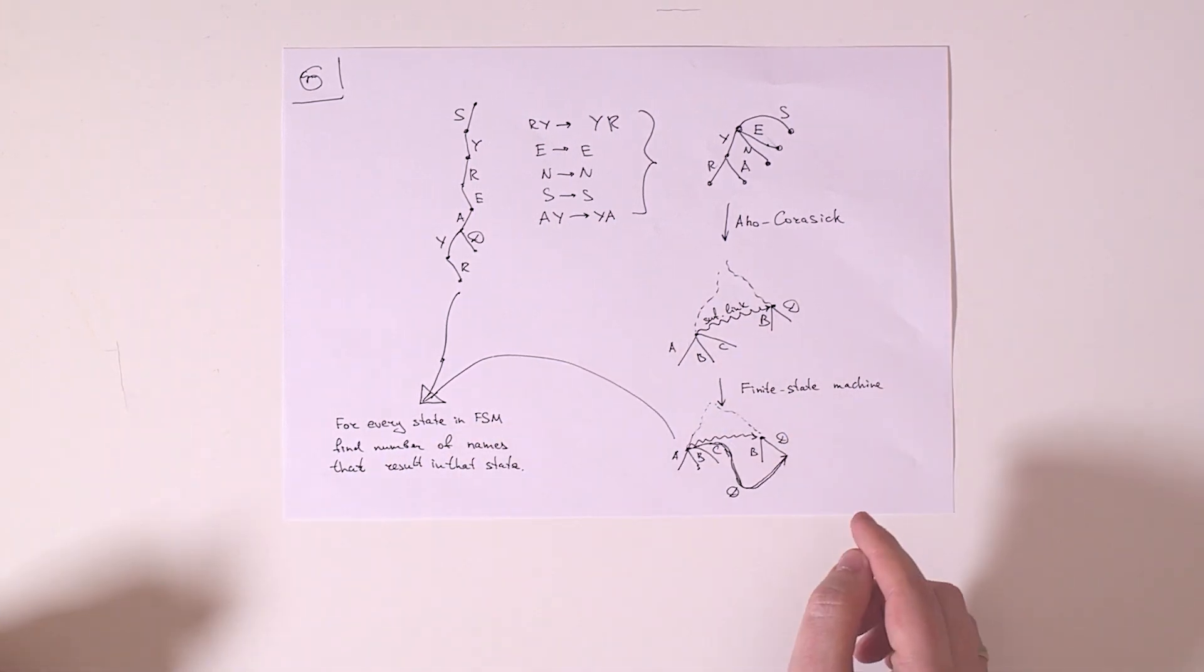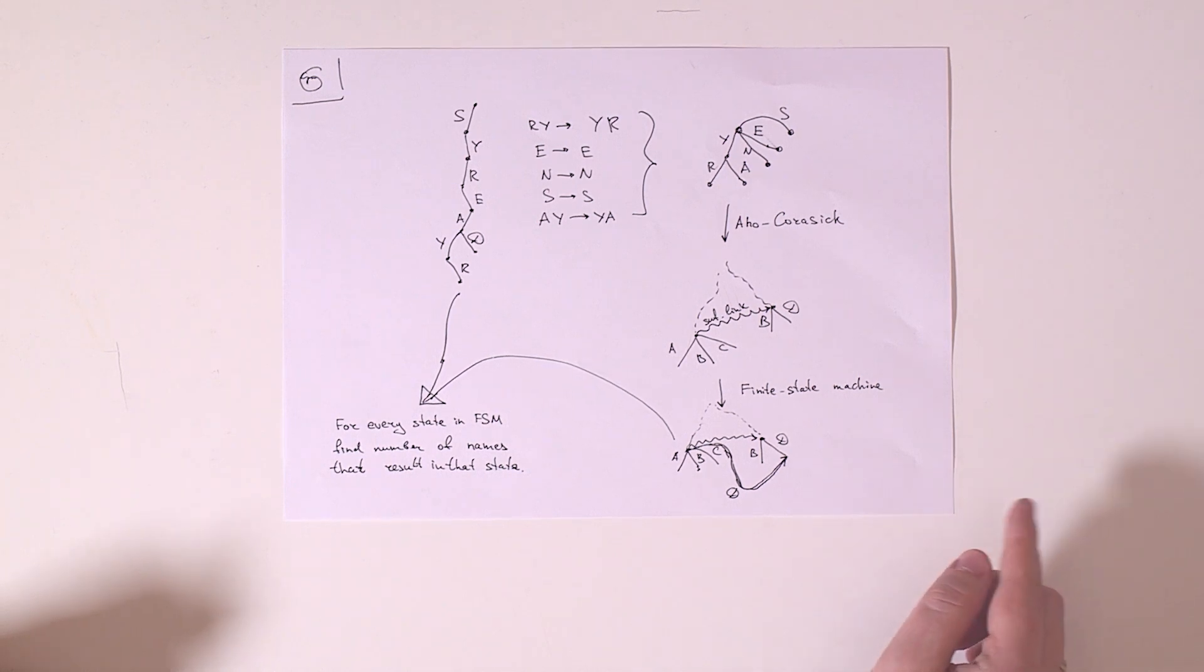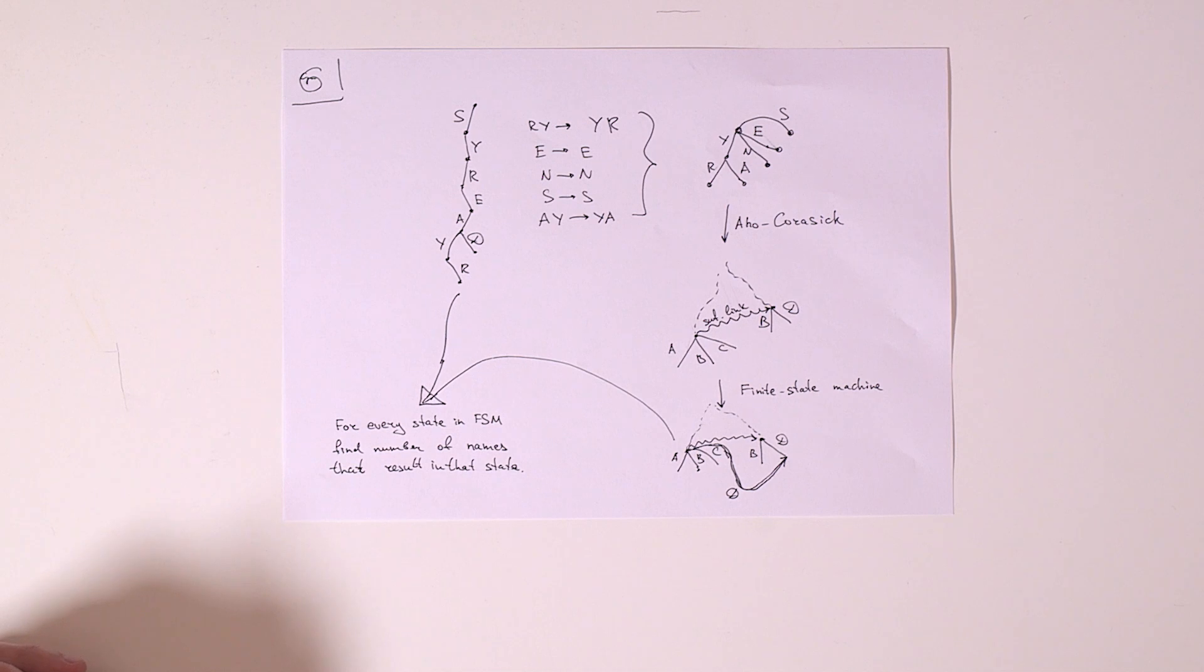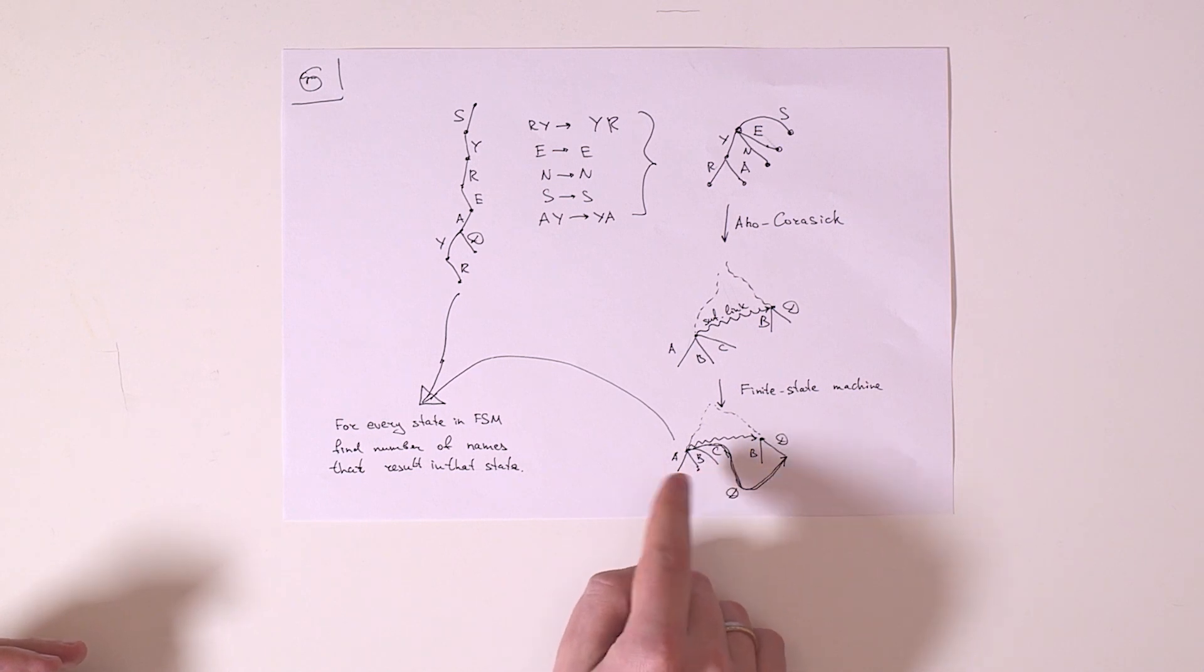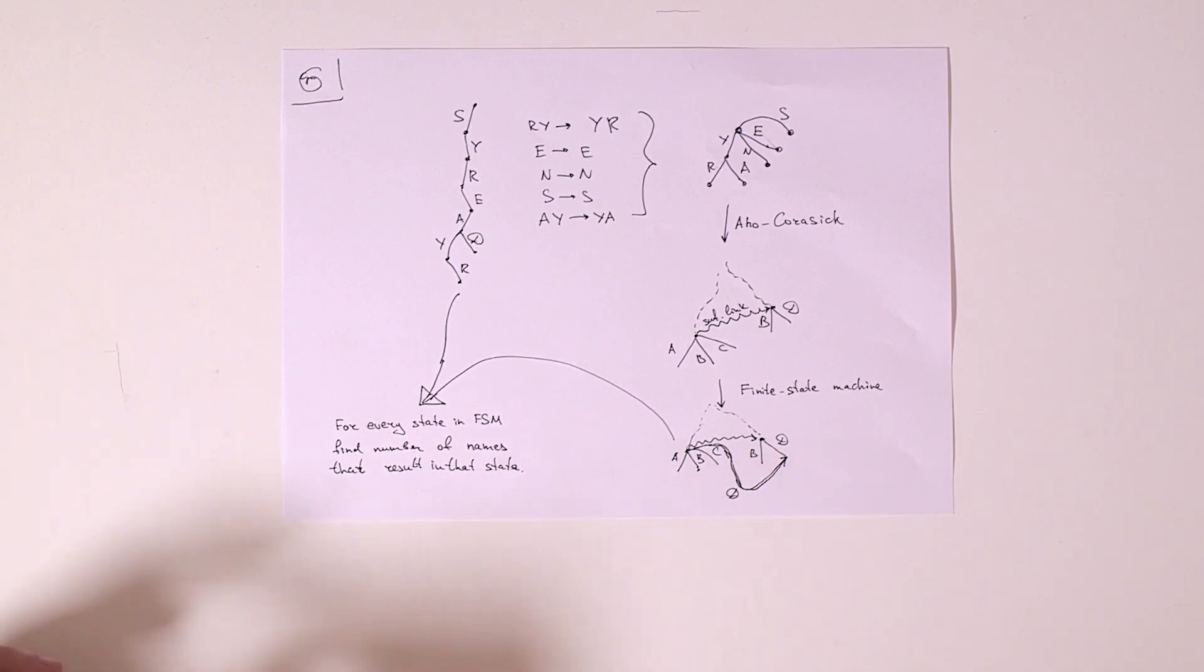What we do then is we convert this tree into finite state machine by adding links to letters that don't have outgoing edge from given node. As example if we have node where we have outgoing edges with A, B and C and suffix link from that node goes into a vertex that has B and D as outgoing edges,